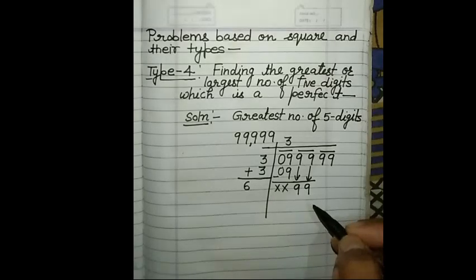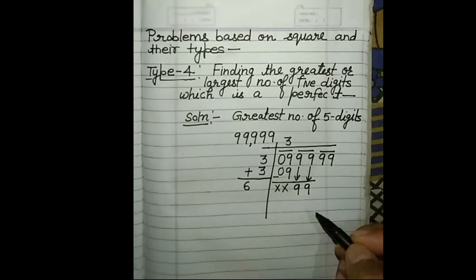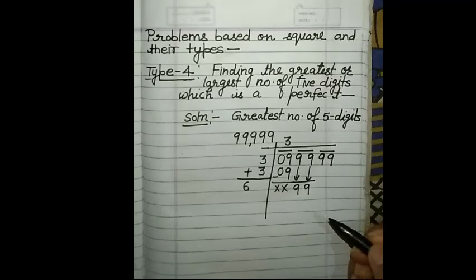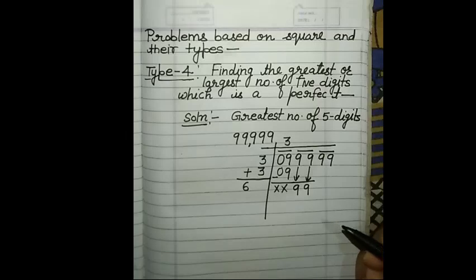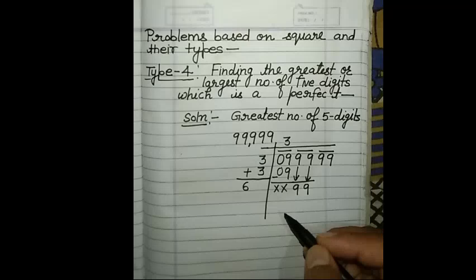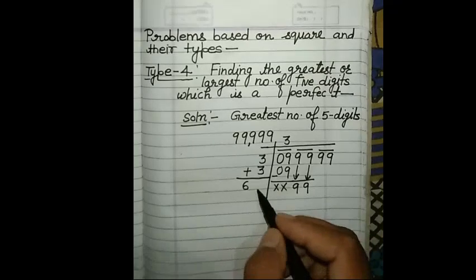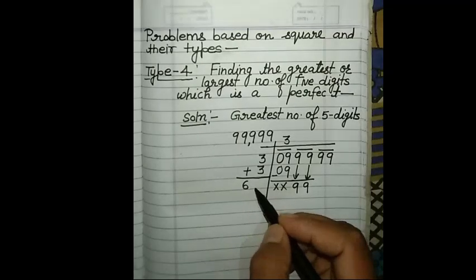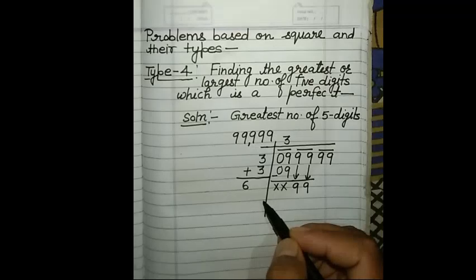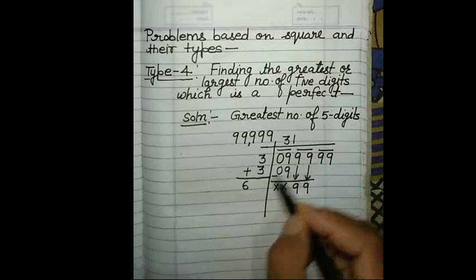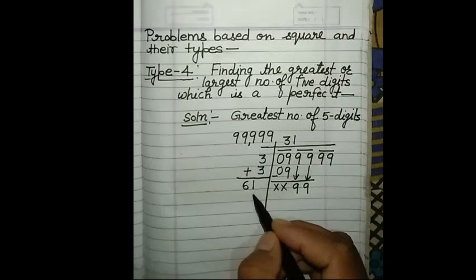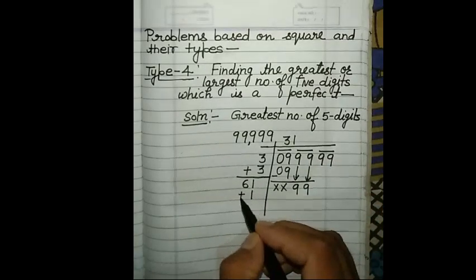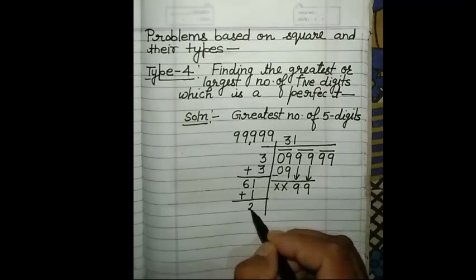The methods are the same as the long division square root method. So you need to see a video if you want to understand the long division method in detail. Now, if we try 2, it will be more — because 2 times 62 is greater than 24. So here we write 1. We get 1, 1, 2, 6.